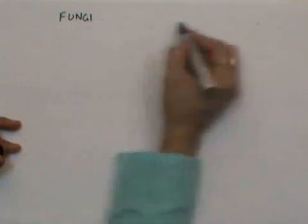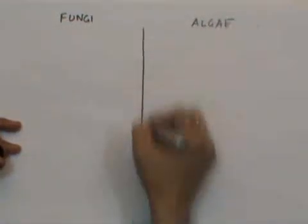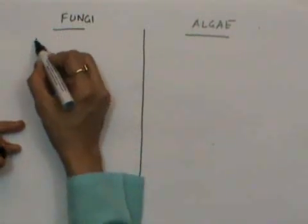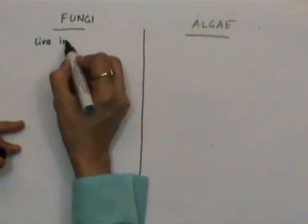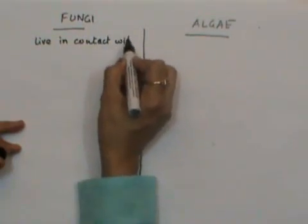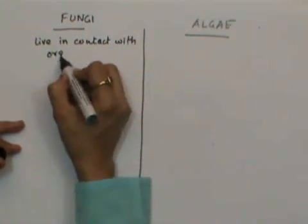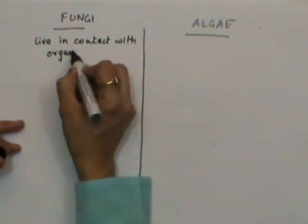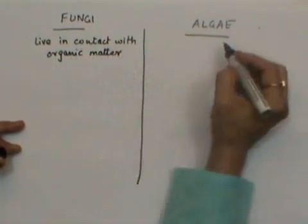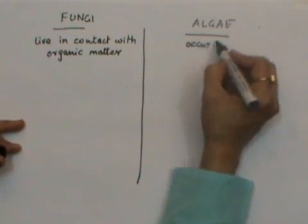Let us now study some differences between fungi and algae. The fungi live in contact with organic matter, whereas the algae occur freely.